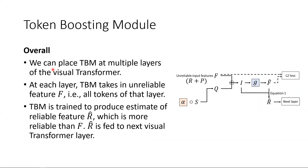In summary, we can place TBM at multiple layers of the visual transformer. This allows us to use contextual information in multiple layers to additionally boost the quality of features. At each layer, the TBM takes in unreliable feature F — in other words, all the tokens of that layer — and is trained to produce an estimate of the reliable feature R-hat, which is more reliable than F, and this R-hat is fed into the next visual transformer layer.